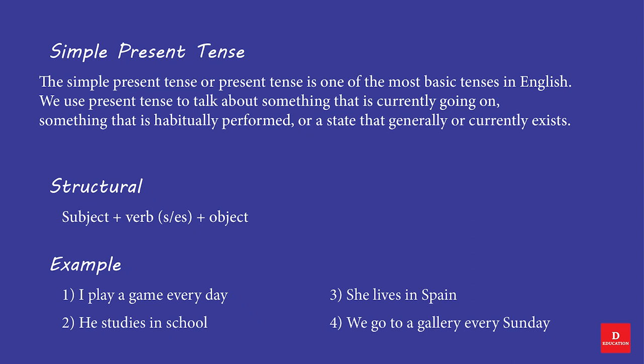Simple Present Tense. The Simple Present Tense, or Present Tense, is one of the most basic tenses in English. We use Present Tense to talk about something that is currently going on, something that is habitually performed, or a state that generally or currently exists.